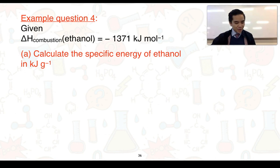Let's now look at how we can actually use this conversion chart. Example question four: given the enthalpy of combustion for ethanol is −1371 kilojoules per mole, part a, calculate the specific energy of ethanol in kilojoules per gram. Remember to do this we need to know the molar mass of ethanol which I've given as 46.068 grams per mole.